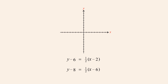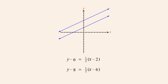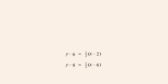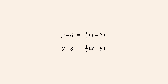One easy way to test whether two equations with the same slope describe different lines is to find where each line crosses the y-axis. If the two equations intersect the y-axis at different points, then they do not describe the same line. On the other hand, if two equations with the same slope intersect the y-axis at the same point, then both equations must describe the same line. The y-intercept for each equation can be found by setting x to zero; the resulting value of y is the y-coordinate of each line's y-intercept.